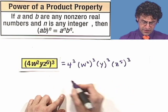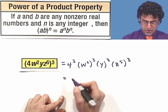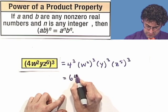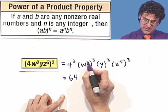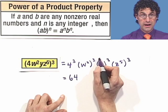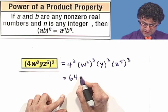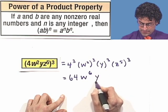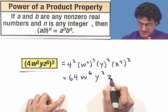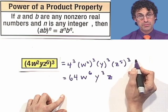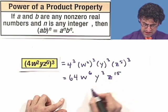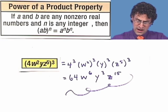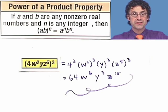We can simplify further. What is 4 cubed? That's 4 times 4, which is 16, times 4 is 64. Since I'm raising a power to another power, I multiply the exponents. So I see w to the 2 times 3, which is 6; y cubed; and z to the 5 times 3, which is 15. So this simplifies to 64 w to the 6, y cubed, times z to the fifteenth power.